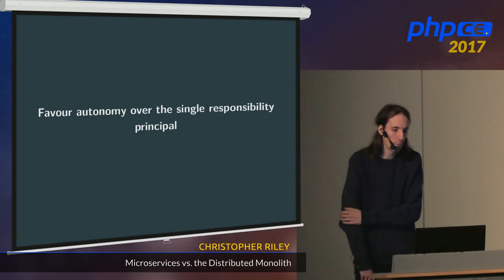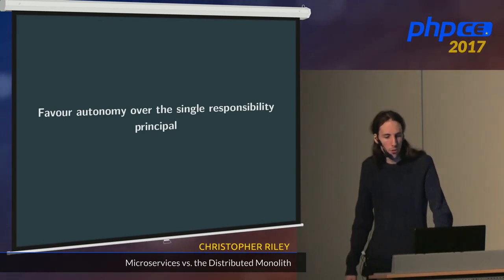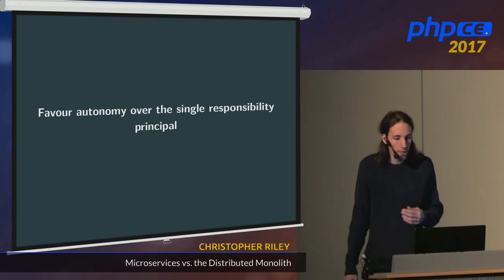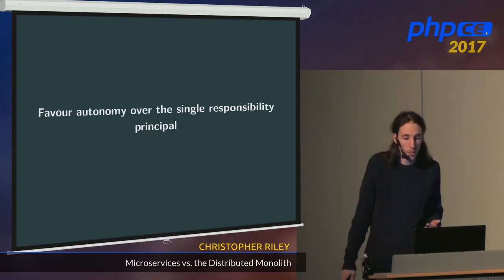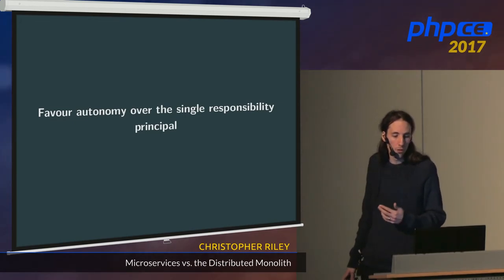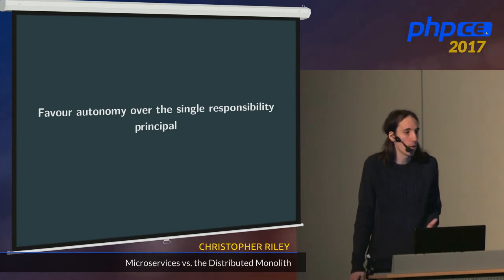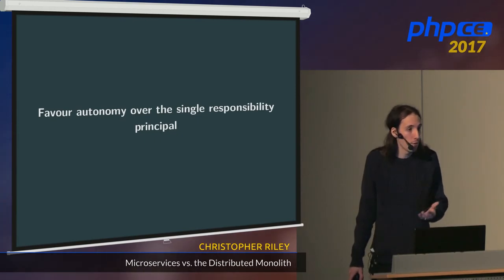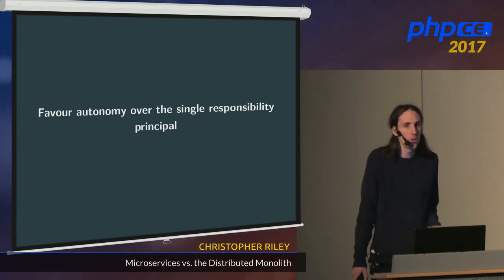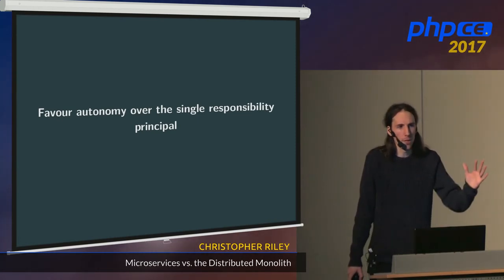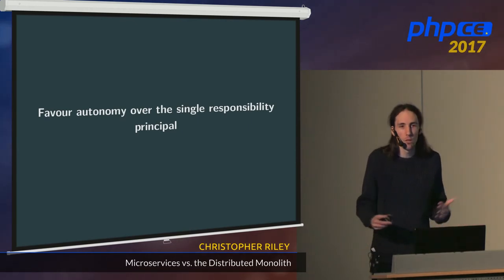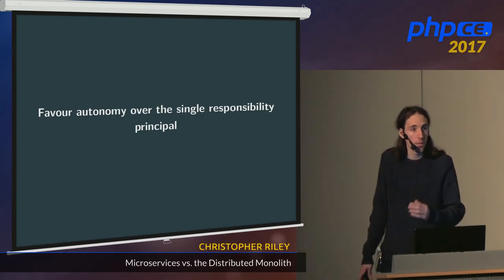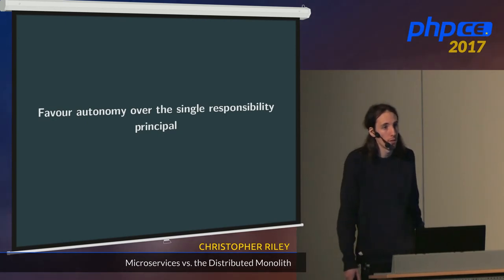Favour autonomy over the single responsibility principle. Many of the problems you'll run into when building microservices come from a high degree of interaction between those microservices, which can come from overzealous enforcing of the single responsibility principle. It can be a trade-off worth making to put similarly unrelated functionality into a microservice because it's the only microservice that makes use of that functionality. If you've got an address lookup service that's only ever used by the user registration microservice, does it need to be a separate service? Probably not yet — you can always break it out later if your invoicing service needs to use it.